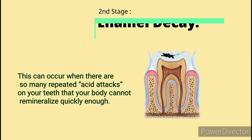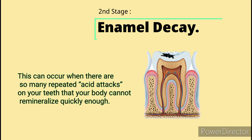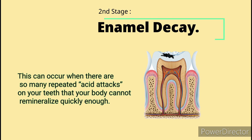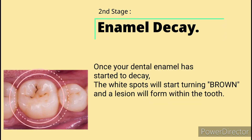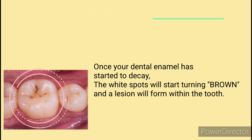Second stage: enamel decay. This can occur when there are so many repeated acid attacks on your teeth that your body cannot remineralize quickly enough. Once your dental enamel has started to decay, the white spots will start turning brown and a lesion will form within the tooth.